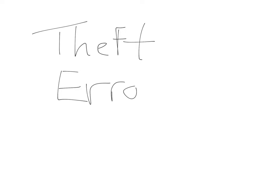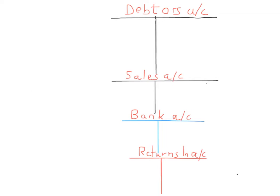Today we're going to look at the use of control accounts to check for theft and also to check for errors. To understand control accounts properly, we need to refresh our memories as to how a debtor and a creditor is actually created. Looking at blank T-accounts, the original transaction when we sell goods on credit is to credit the sales account — say a thousand dollars — and debit the debtor account, as the new debtor is created by selling goods on credit. You usually give them about three months to pay you back.